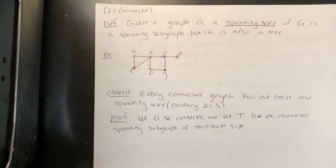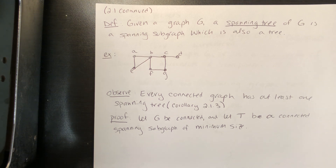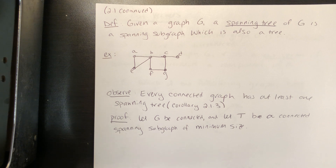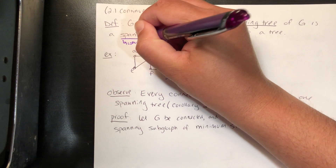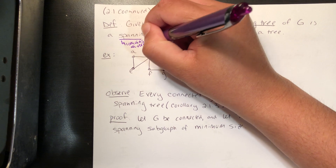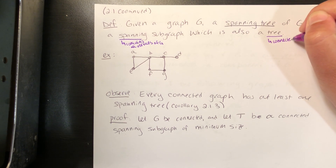The second problem in the warm-up for section 2.1 introduced the idea of a spanning tree of a graph: a subgraph which is spanning, meaning it contains all of the vertices of the original graph, and which is also connected but minimally connected — we don't want to use more edges than necessary. This gets at the idea of a spanning tree: given a graph G, a spanning tree is a spanning subgraph which is also a tree, meaning it must be connected and contain no cycles.